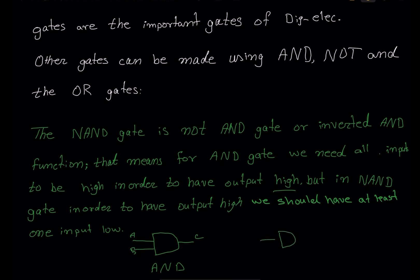But this is not the case in the NAND gate. For the NAND gate, we have input A, input B, and an inverted bubble, giving output C. For the AND gate, in order to have output C high, we need input A and B both high. But if we have input A and B both high in the NAND gate, the output C will be low. When one input is high and another is low, in an AND gate the output would be low, but if you invert that, output low becomes output high in the NAND gate.